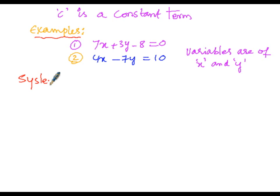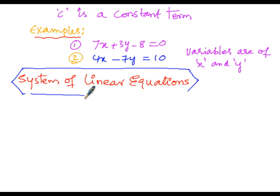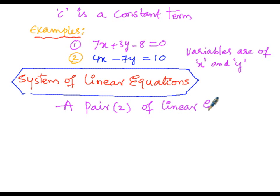Now let us discuss the system of linear equations. A system of linear equations consists of a pair of linear equations in two variables — that is, two linear equations considered together.